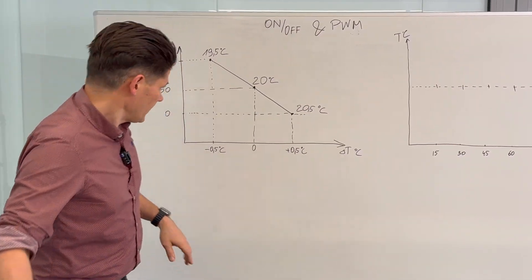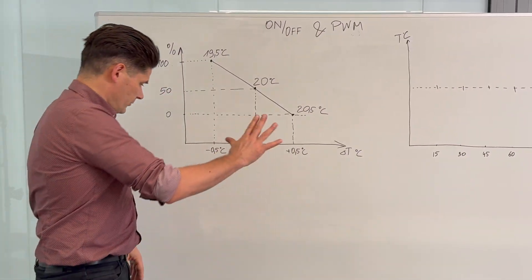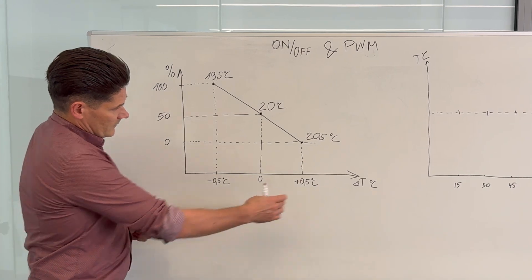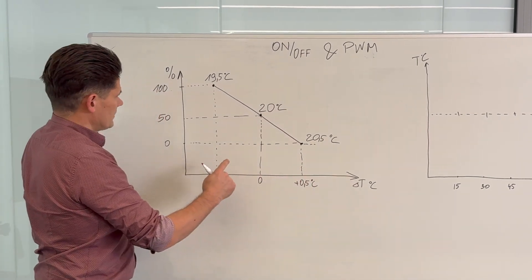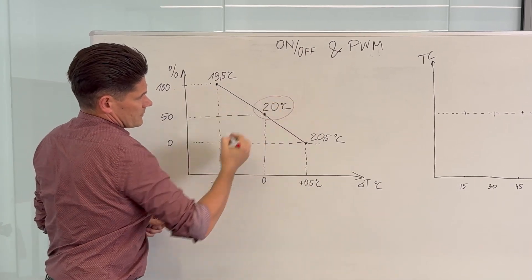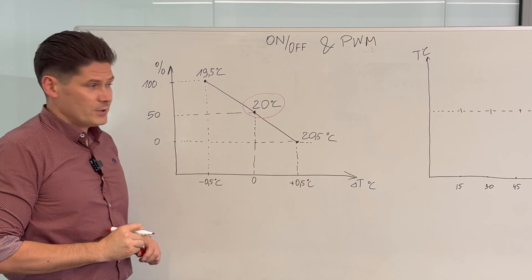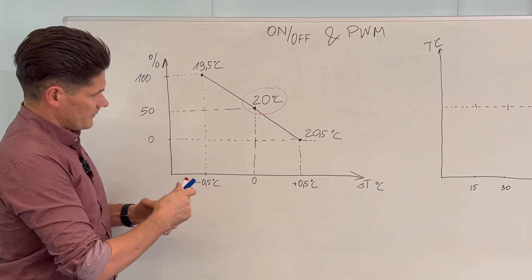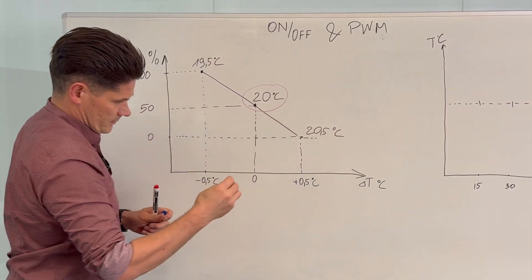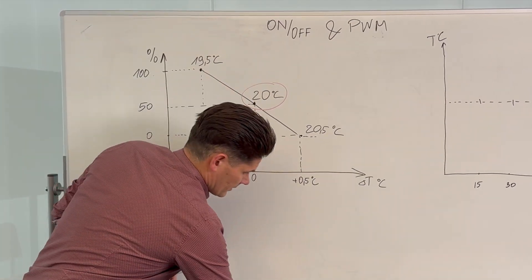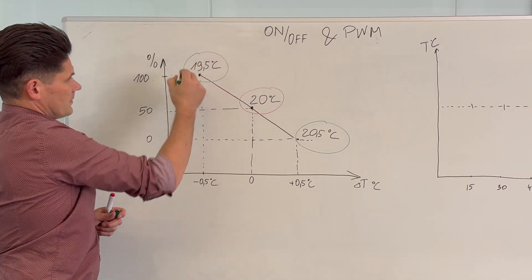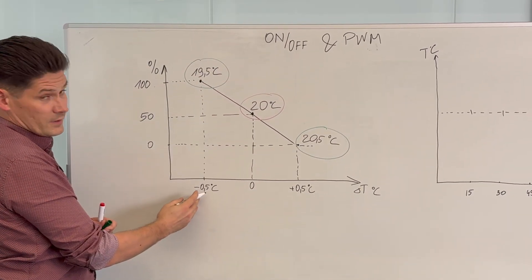I've prepared two graphs. On one axis we have delta T, and on the other we have percentage of opening. This line is my set point - my room temperature set point. Here is room temperature plus 0.5 degrees, and this temperature is minus 0.5 degrees.